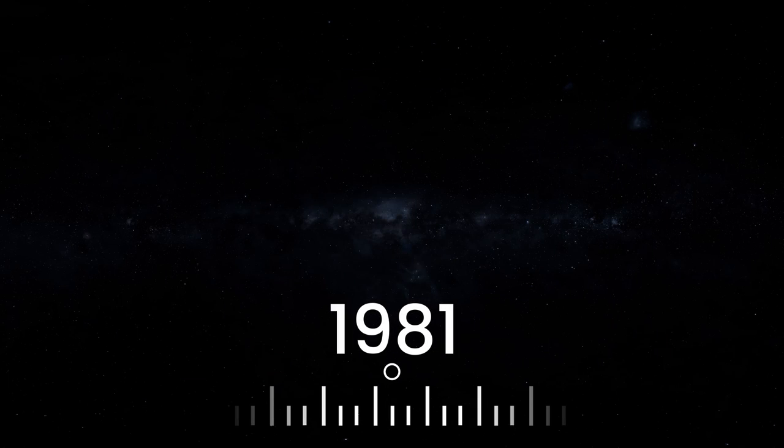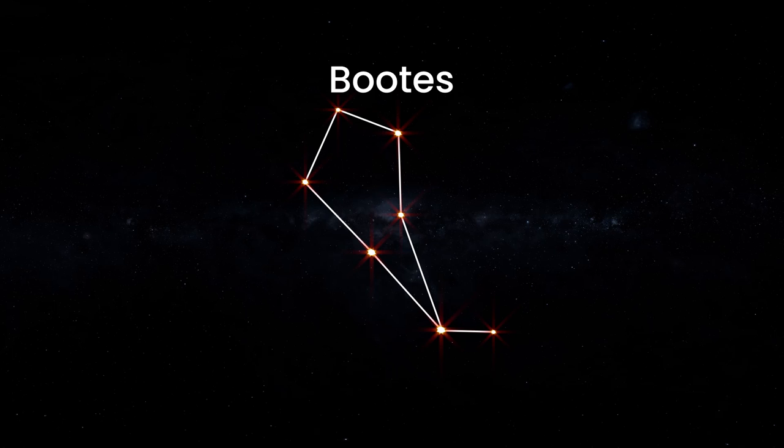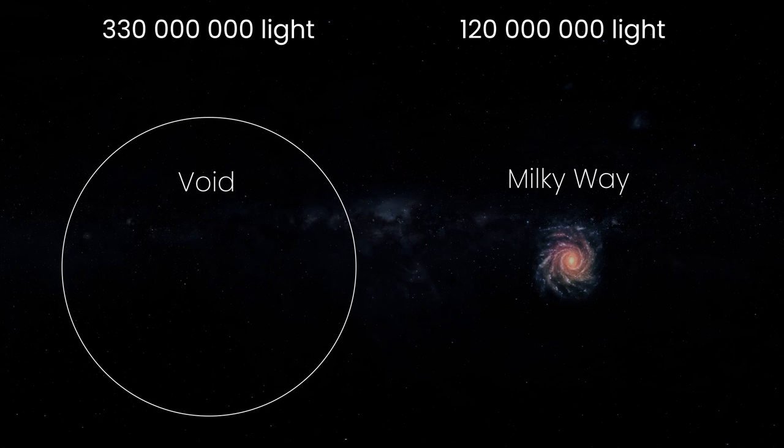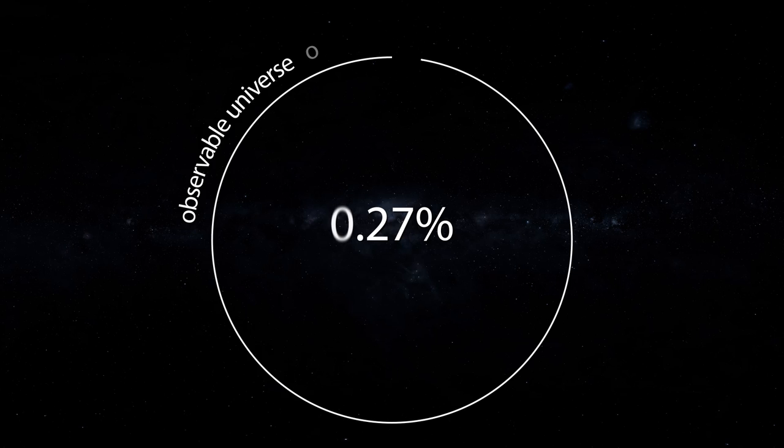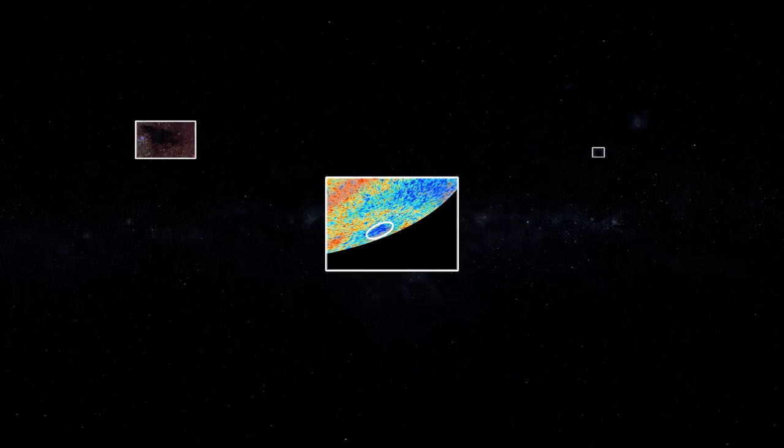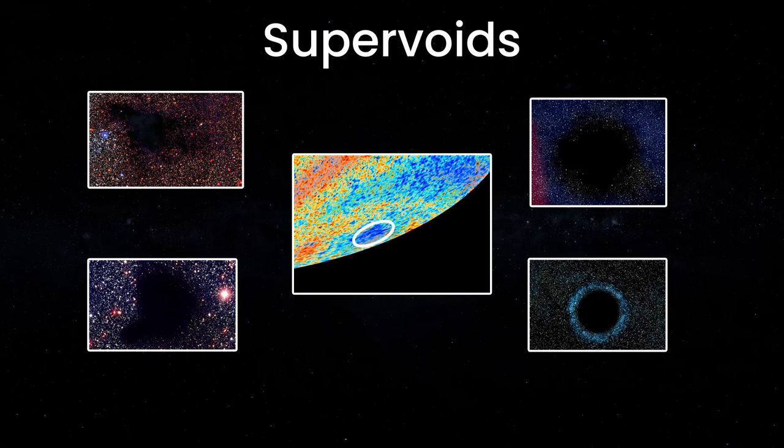And in 1981, a void was discovered in the constellation Boötes, the size of which was 330 million light-years. And this is 0.27% of the diameter of the observable universe, which today is 93 billion light-years across. Such gigantic voids, and there are many of them, were called supervoids.